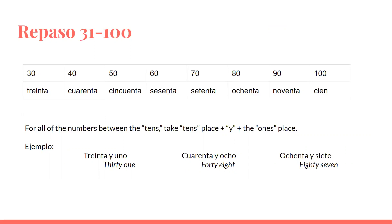Now, for all the numbers between the tens, take the tens place, plus y, plus the ones place. For example, 31 would be 30 and 1, or treinta y uno. 48 would be 40 and 8, or cuarenta y ocho. 87 would be 80 and 7, or ochenta y siete.